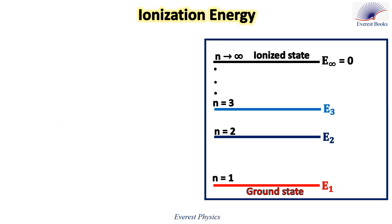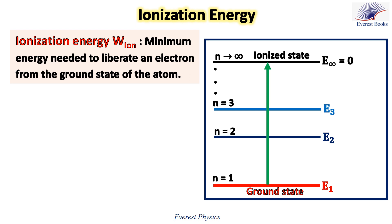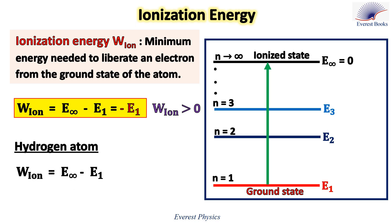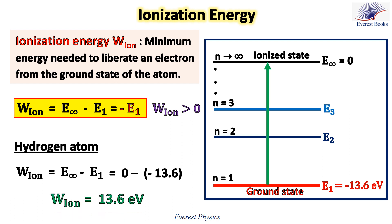When n equals infinity, the electron is no longer bound to the nucleus since E-infinity equals zero. Ionization corresponds to a transition from the ground state to the ionized state. We define the ionization energy as the minimum energy needed to liberate an electron from the ground state. For hydrogen, the ionization energy equals E-infinity minus E1, and since E1 equals minus 13.6 electron volts, the ionization energy is 13.6 electron volts.